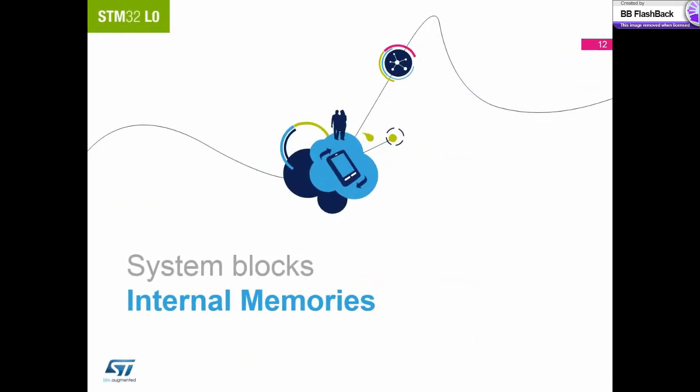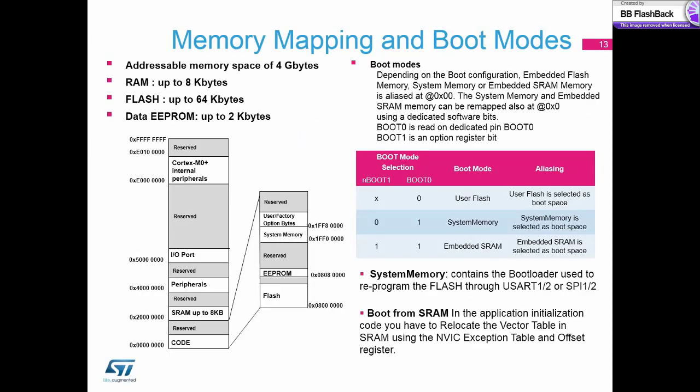The internal memories are the largest single slave device within the STM32L0. These memories are mapped to a defined four gigabyte address space specified by ARM, separating flash, RAM, external memories and peripherals into different address blocks. Within the flash box, we have the system memory that contains the boot loaders controlled by the boot zero pin on the device. This allows you to program the flash via the USART or the SPI.